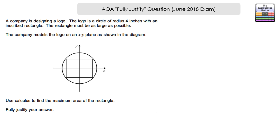A company is designing a logo. The logo is a circle of radius 4 inches with an inscribed rectangle. The rectangle must be as large as possible. The company models the logo on an XY plane as shown in the diagram — a circle with center at the origin and the rectangle inscribed inside it. We must use calculus to find the maximum area of the rectangle and fully justify the answer, showing a reason for each step.